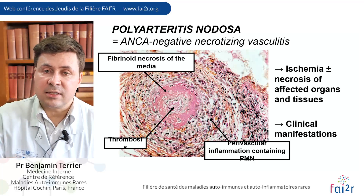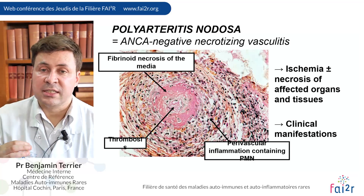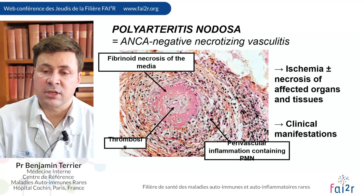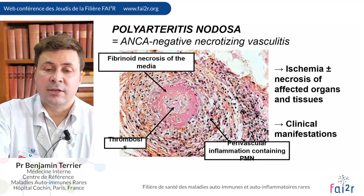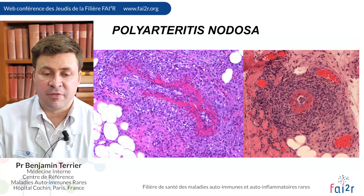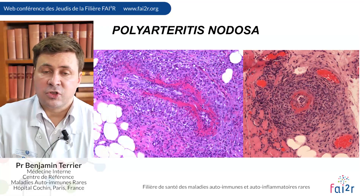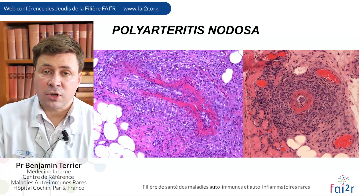This injury of the vessels is responsible for ischemia and sometimes necrosis of the affected organs, leading to the clinical manifestations. You can see on this picture some very suggestive images of polyarteritis nodosa seen in the muscles or the peripheral nerve.